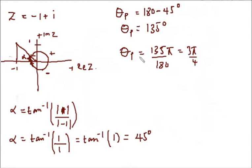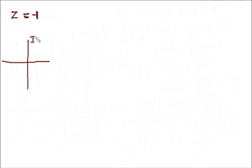Let's take another example. Say we have a complex number z equals minus 1. To find the principal argument, we draw the Argand diagram. This is the imaginary part of z and the real part of z. The real part of z is minus 1, so it is around here.